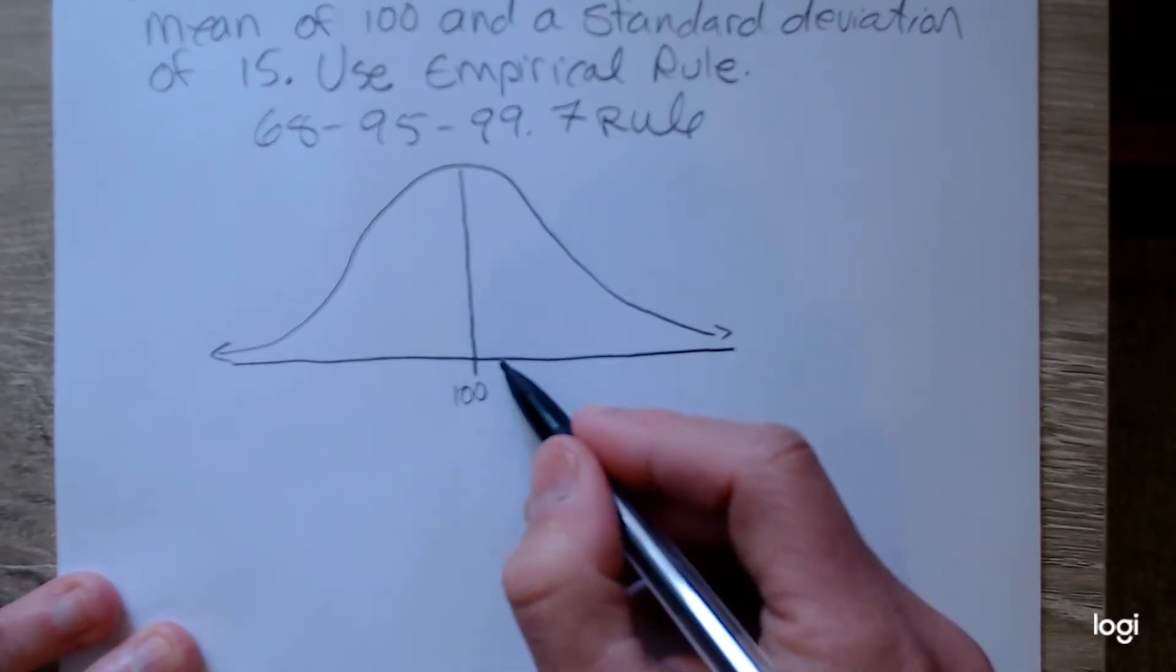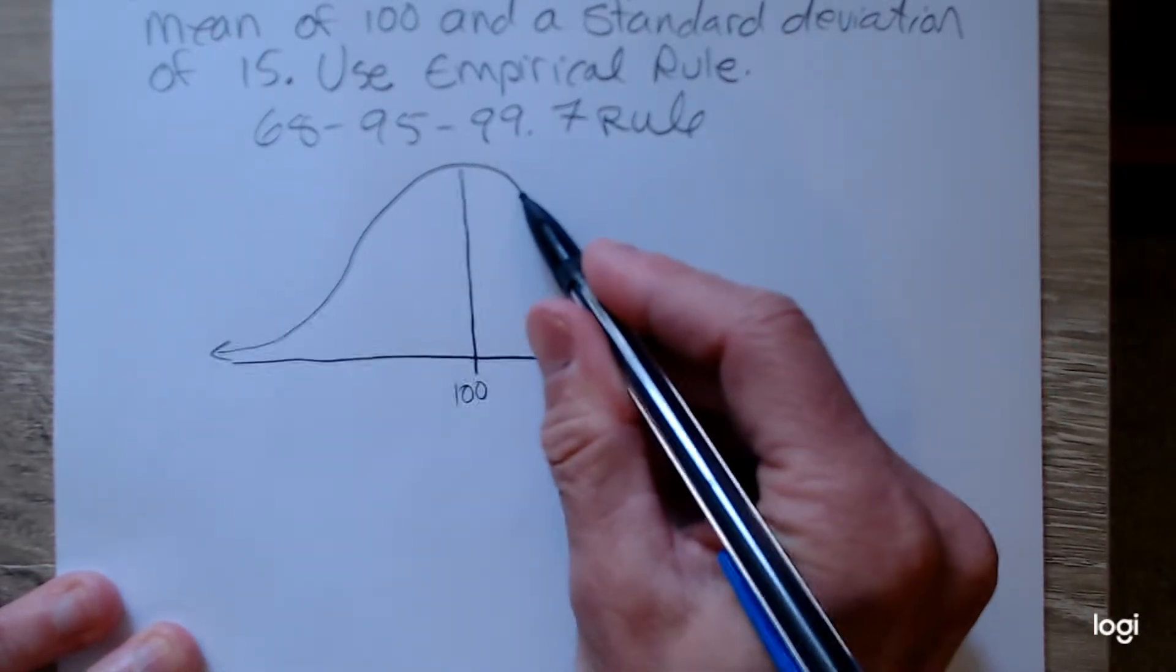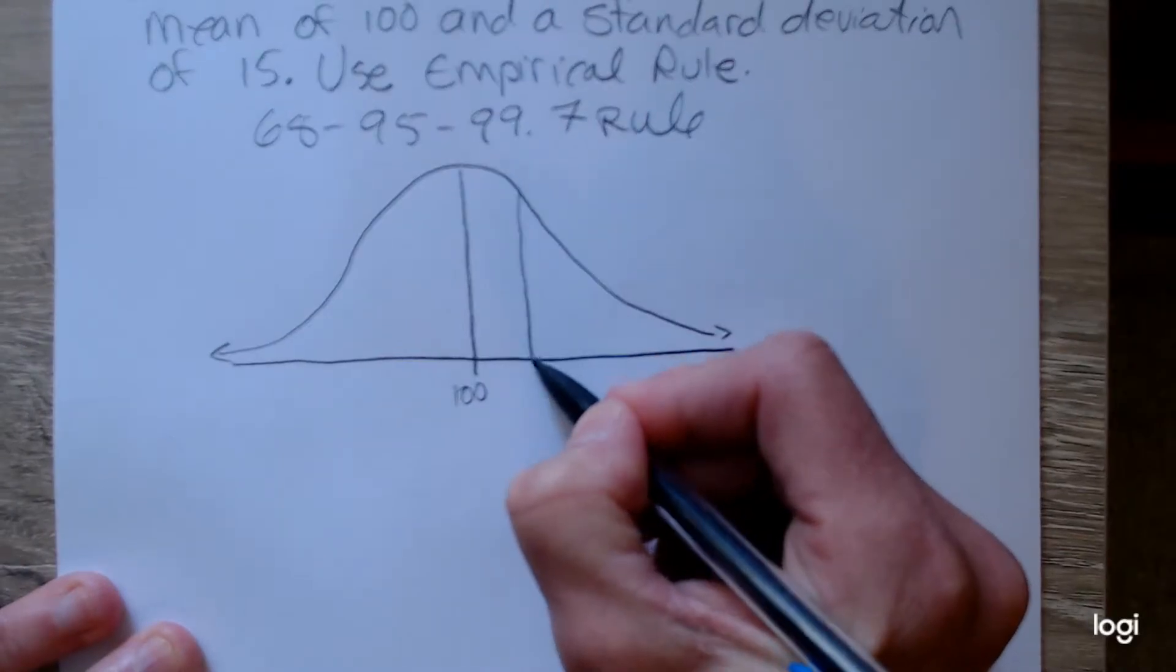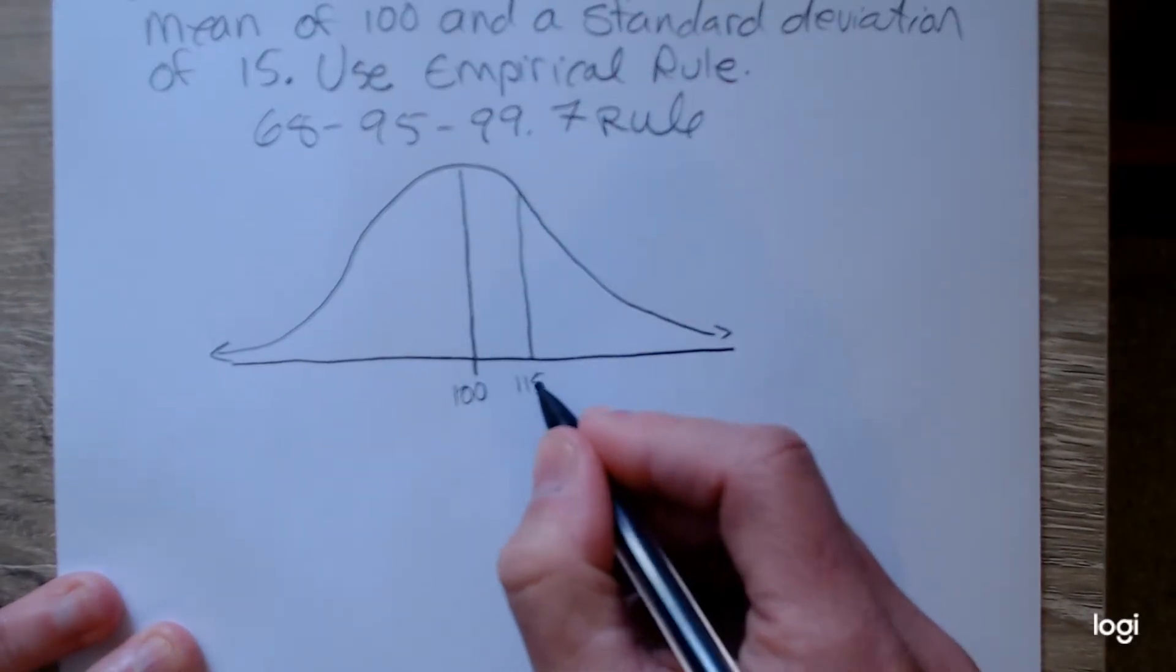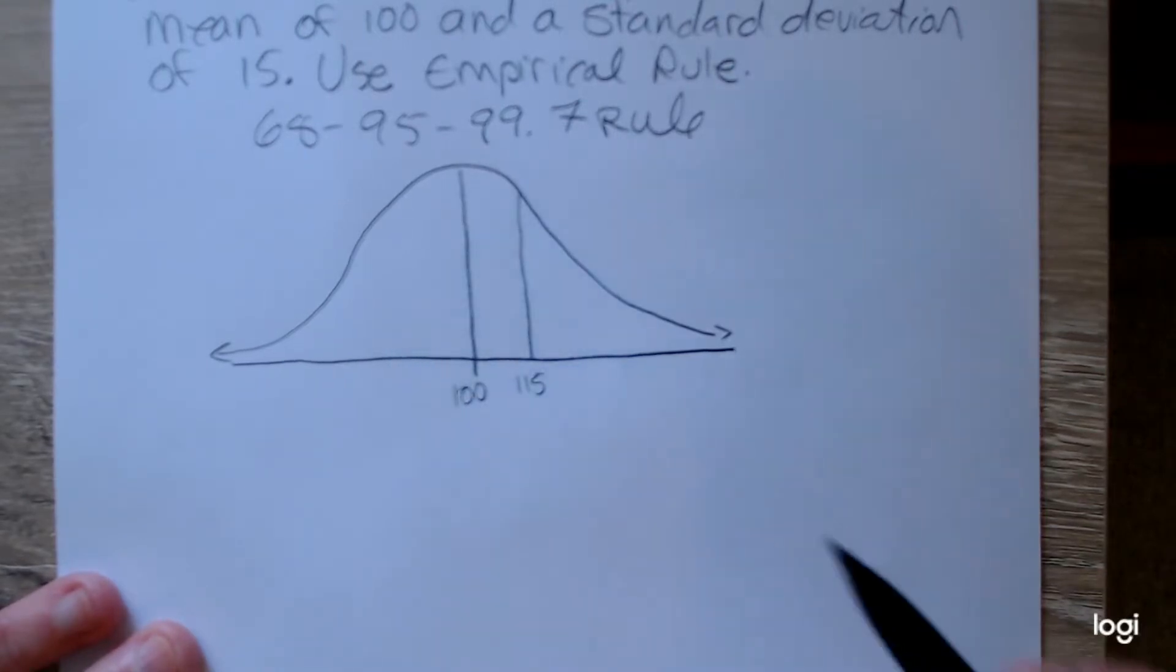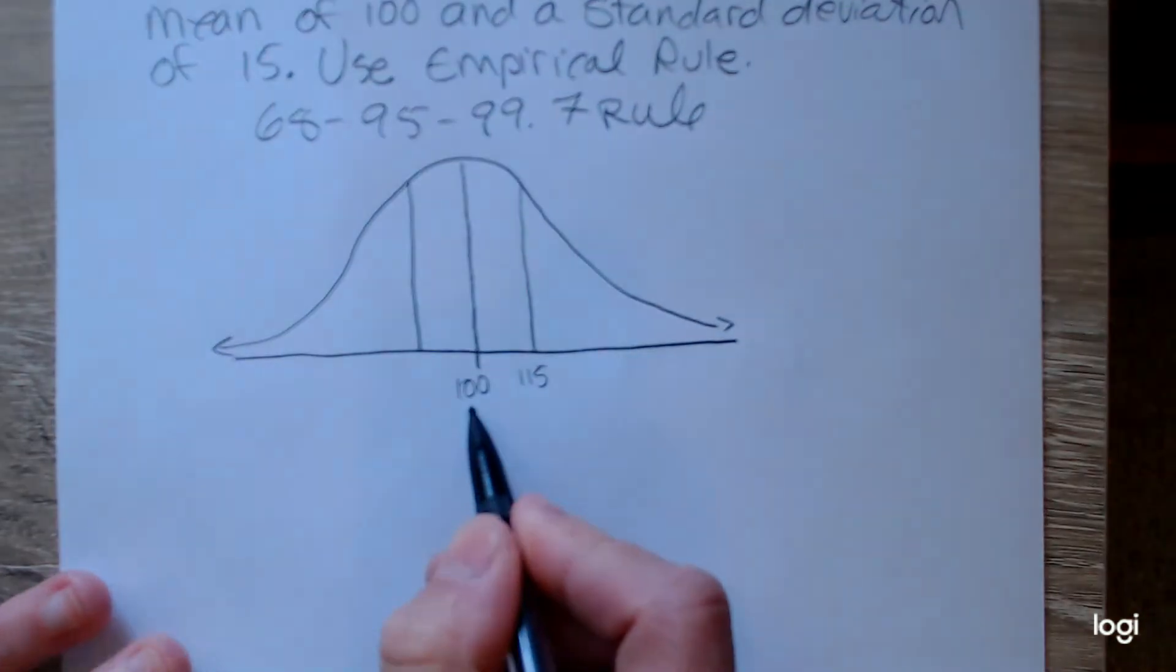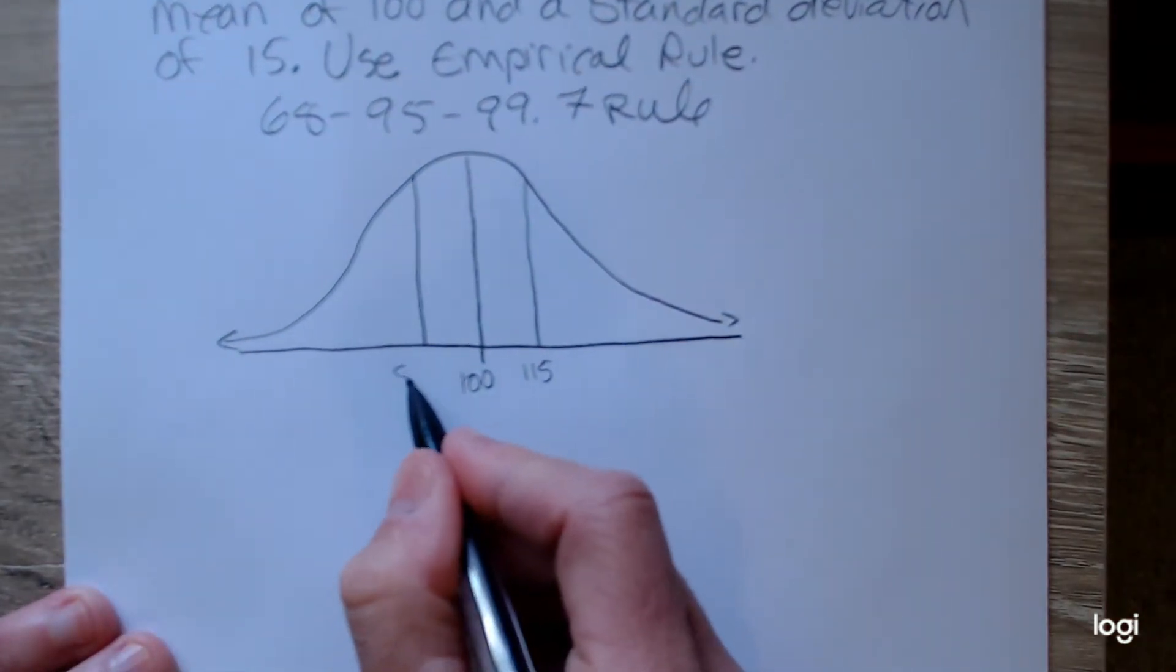So if I go out one standard deviation away from the mean, remember one standard deviation is 15, so it's the mean plus 15. This value will be 115. If I go one standard deviation below the mean, to the left, 100 minus one standard deviation is 85.